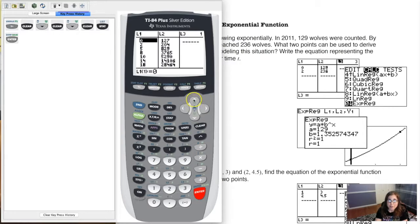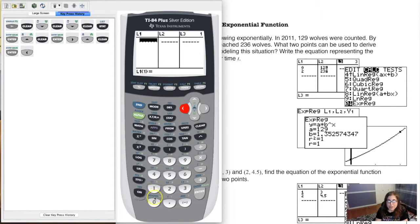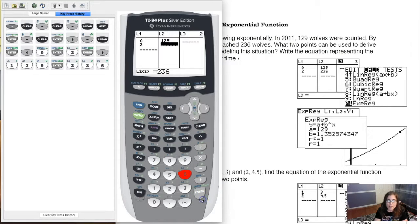See what kind of data I had. So I need to clear that out. I'm going to go up into L1 where L1 itself has the black background. I'm going to hit clear and enter and then let me clear out L2 as well. And I don't have too many data values to put in. I have 0, 129 and then 2, 236 and I'm going to put my x values into L1 and my y values into L2. Alright, so I've got my data entered.